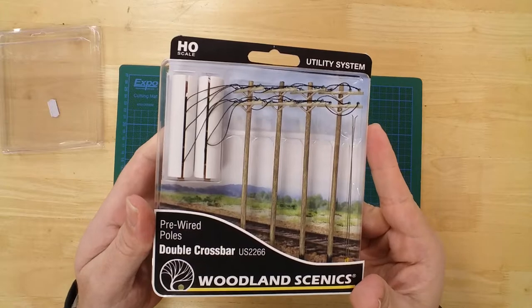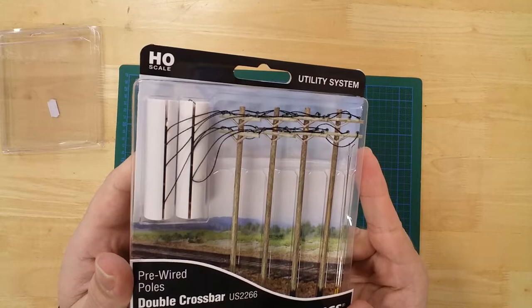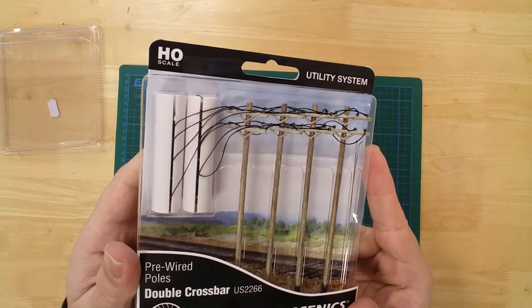The pre-wired double crossbar pole set by Woodland Scenics. Poles measure approximately 120 mm in height.